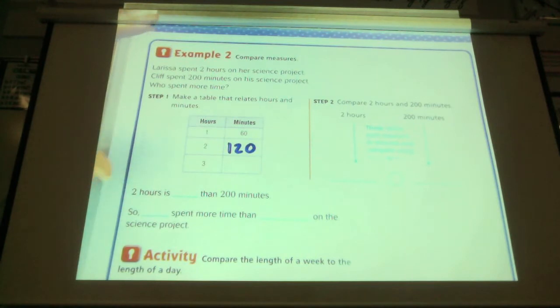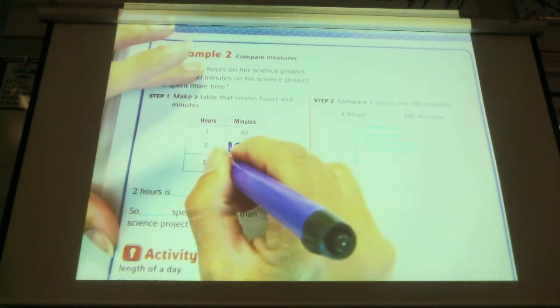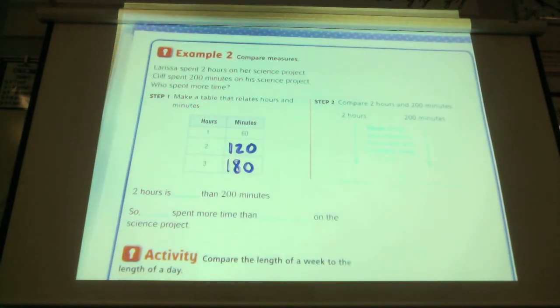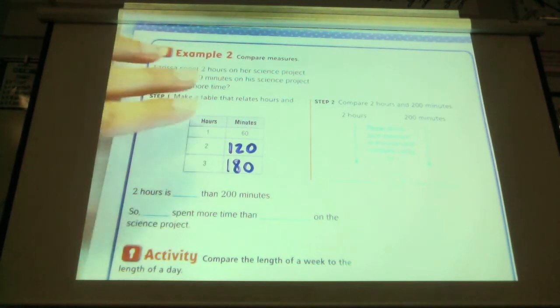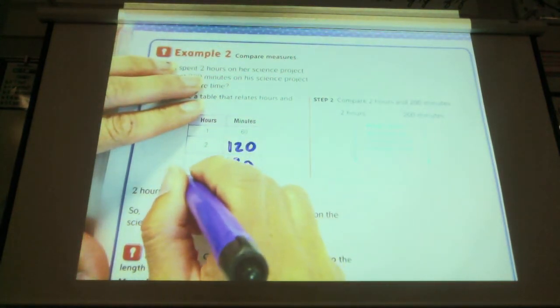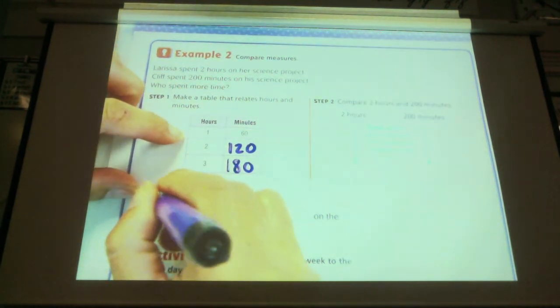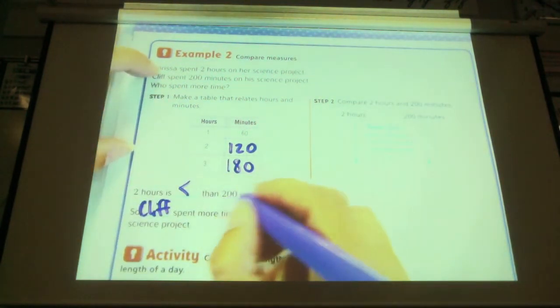One hundred and twenty minutes. Anjali, how many? One hundred and eighty. So, two hours was actually how much? One hundred and twenty. Is it less than or more than 200 minutes? Less than. It's less than. So, who spent more time on the science project? Cliff. Cliff spent more time than Larissa.